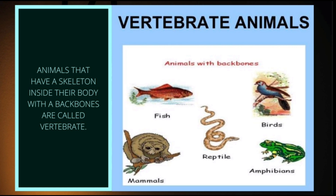Animals that have a skeleton inside their body with a backbone are called vertebrate. These are examples of vertebrate animals. Animals with backbone are fish, birds, mammals, reptiles, and amphibians.